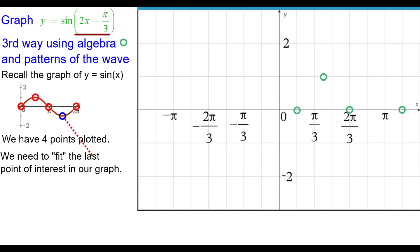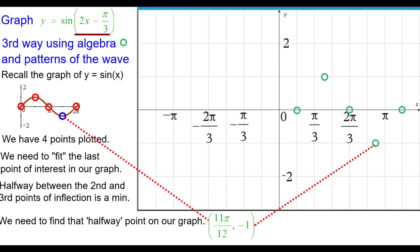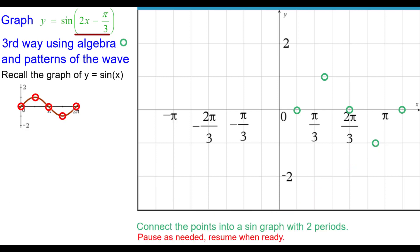And we've got four points. Again, the last one is a minimum between these two points of inflection. So I need to go halfway between these two points and plot a minimum point, which turns out to be at 11 pi over 12 comma negative 1. So I used algebra and the patterns of the curve to do this one.